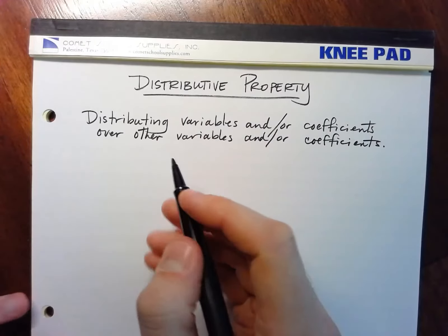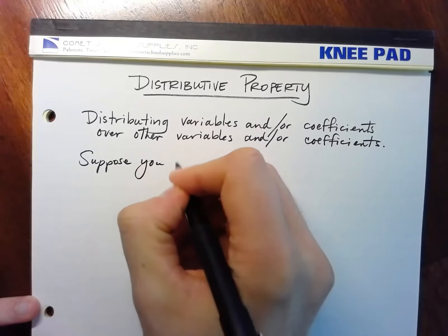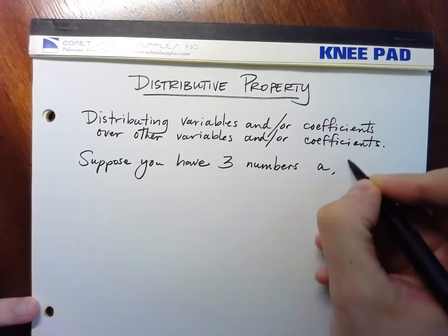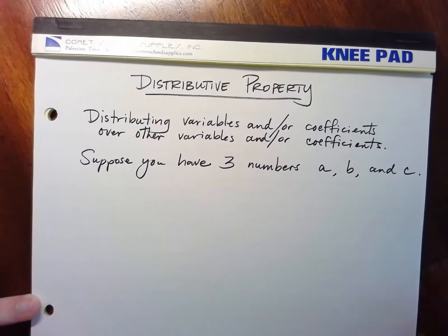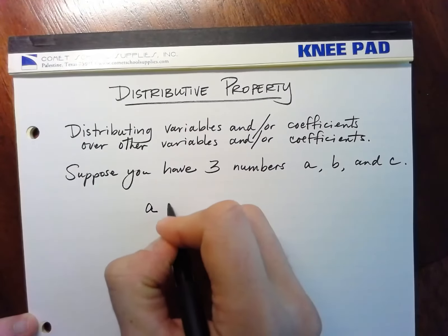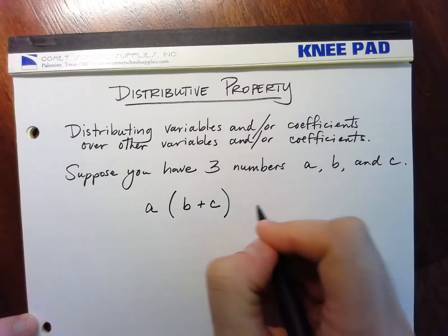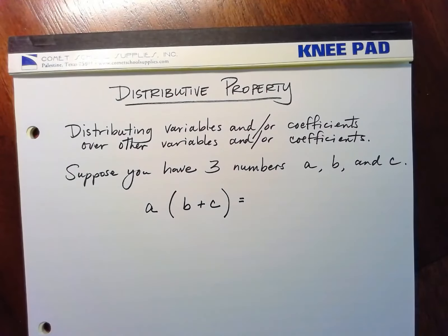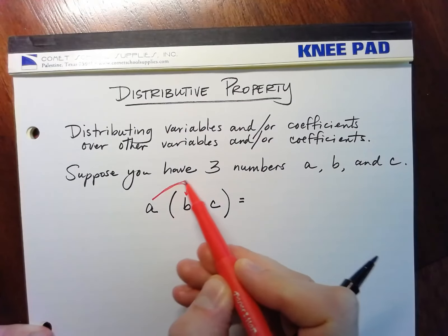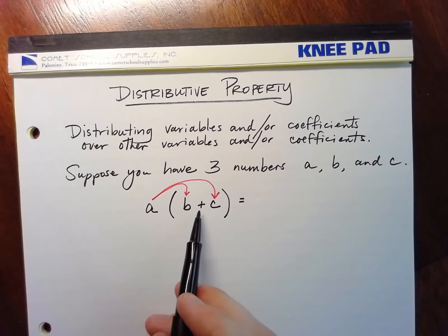So let's suppose we have three numbers: A, B, and C. Then A times (B plus C) — this is what the distributive property tells you. You take A and distribute it across B and across C. You're distributing across things that are separated by plus or minus, which are called terms.